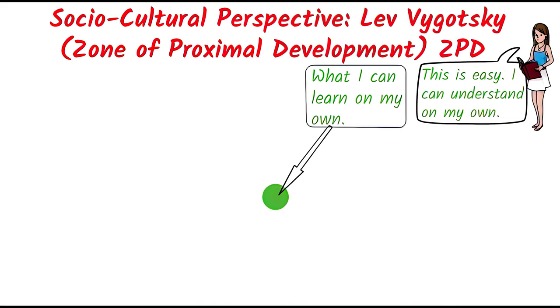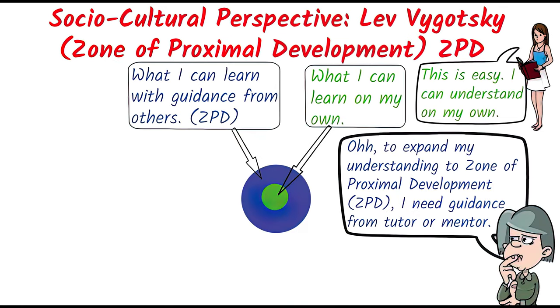The outer reaches of this zone is called the proximal zone, which represents the potential of the human mind which can be realized through social learning or the assistance of others.